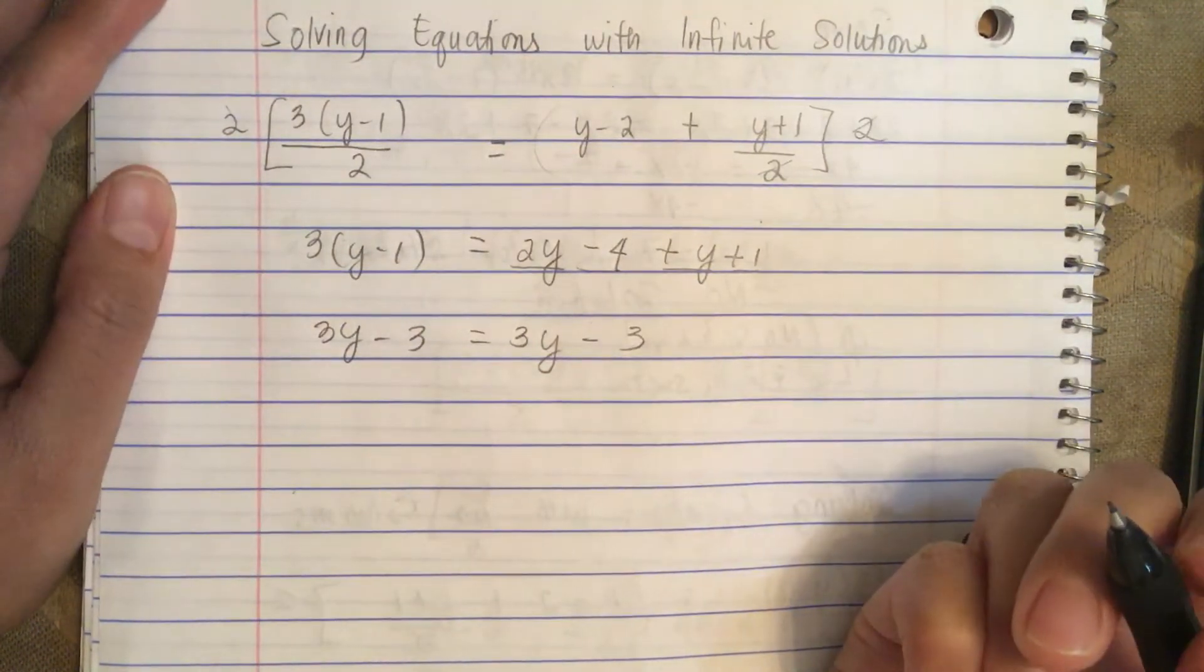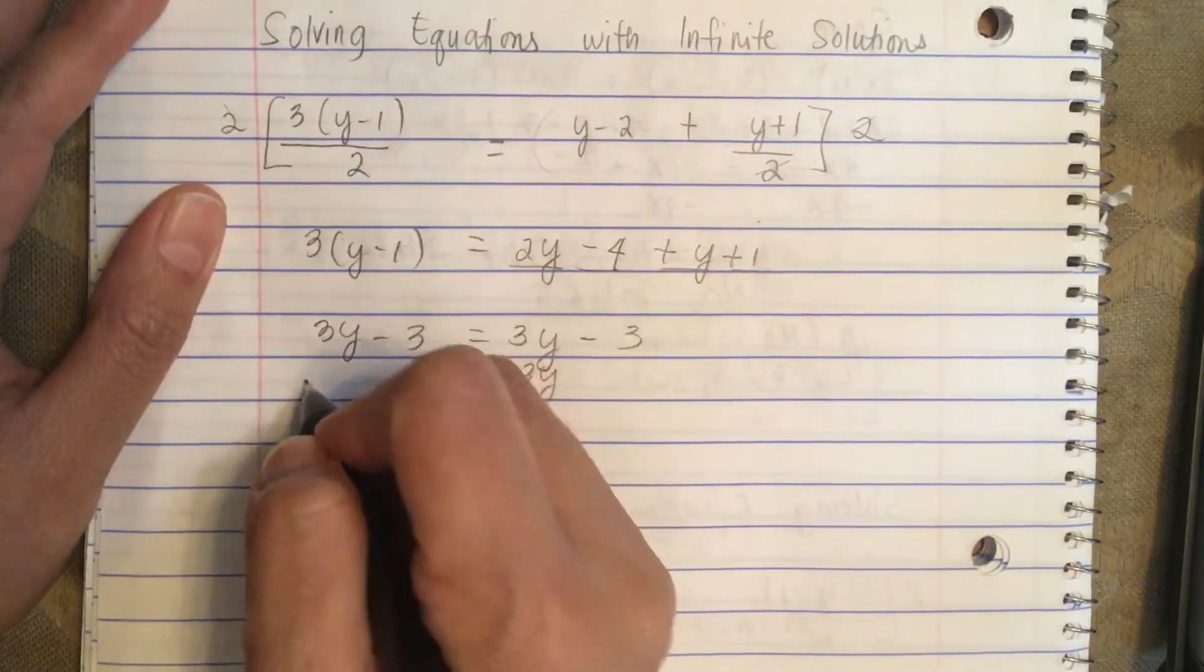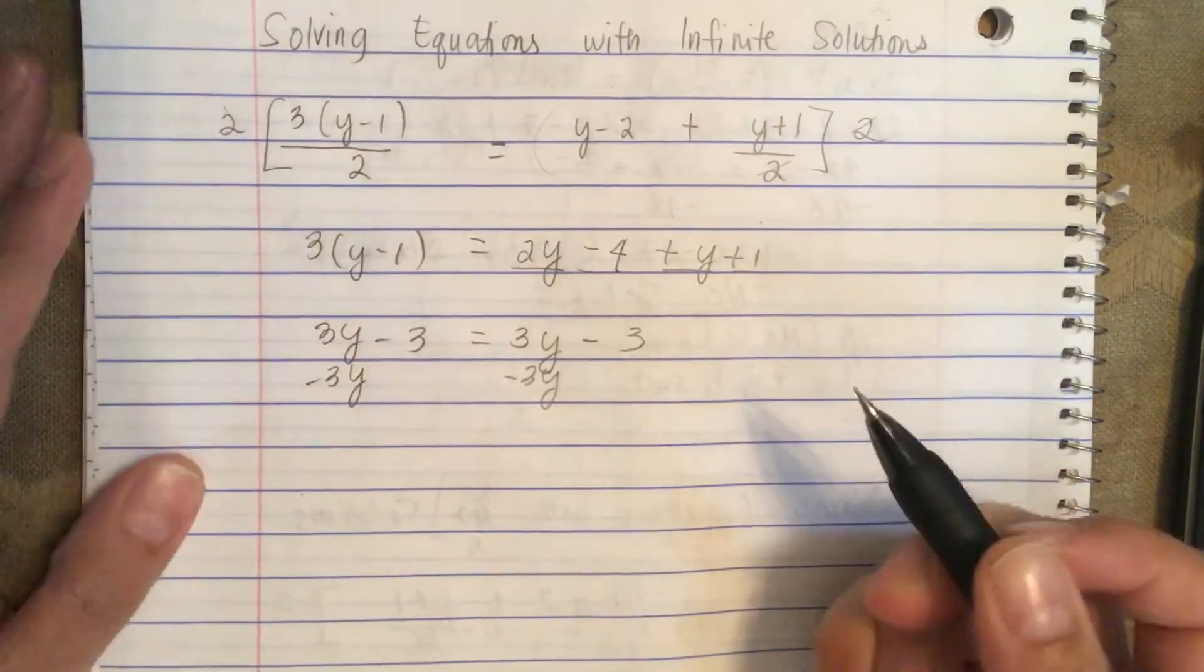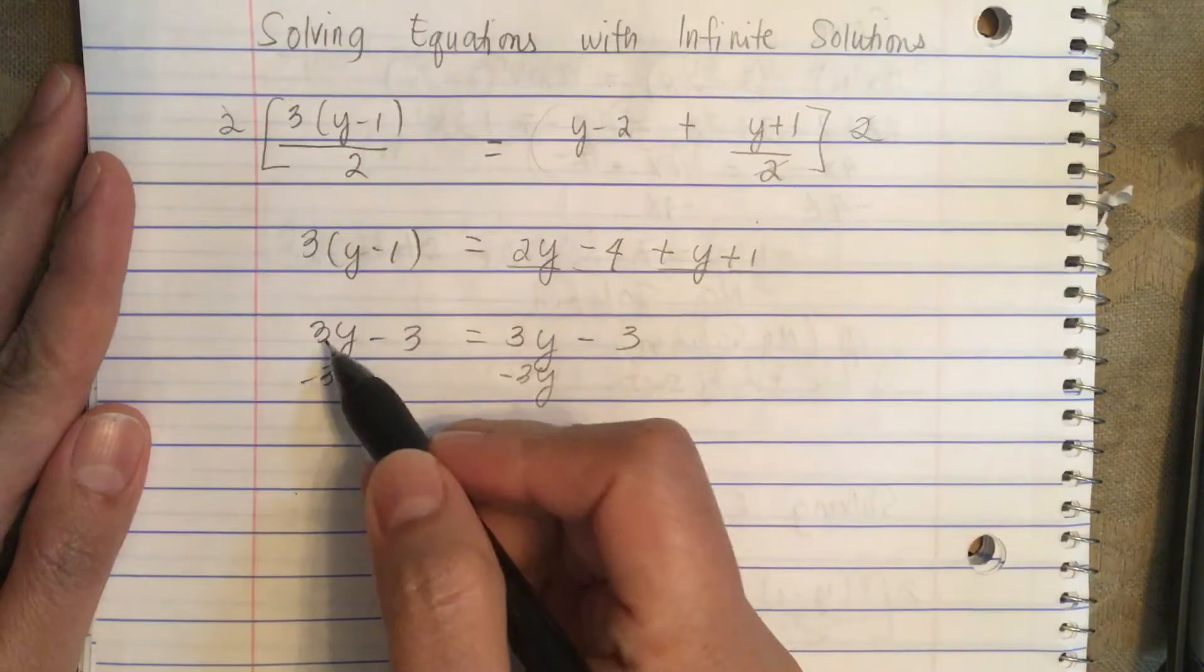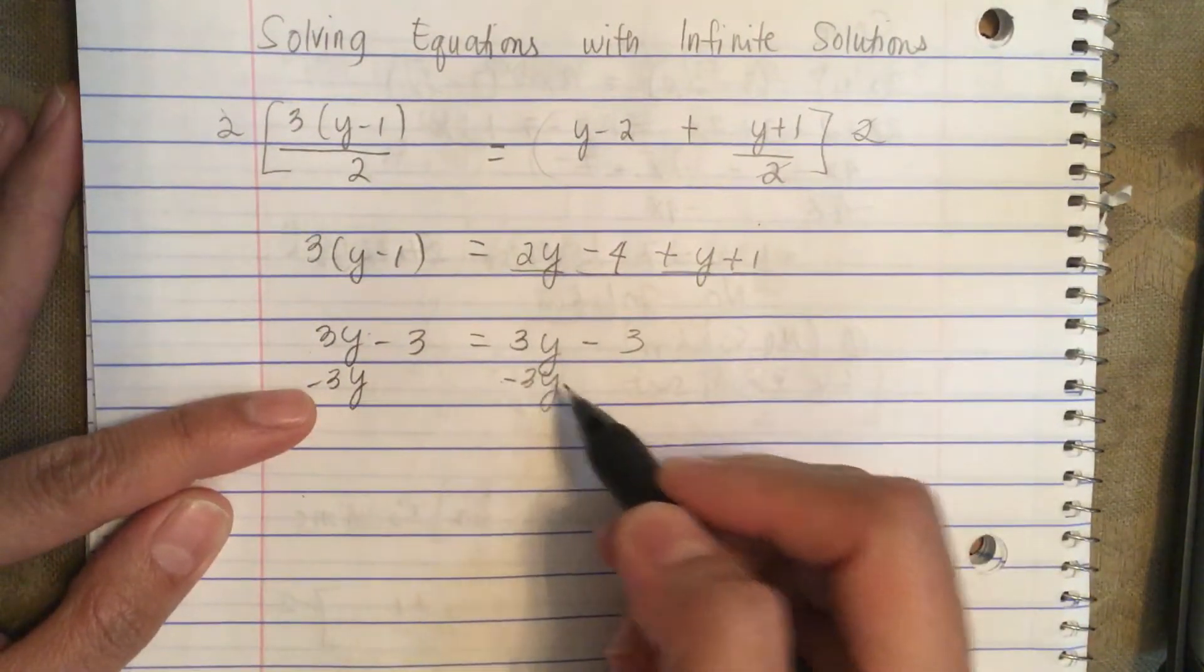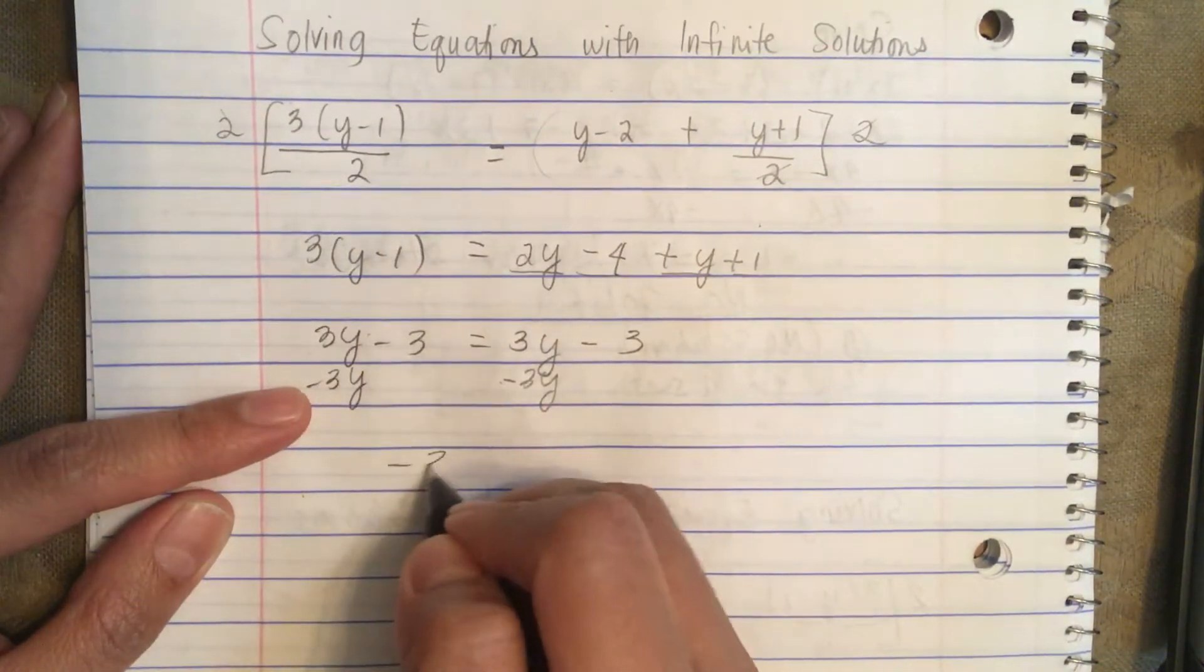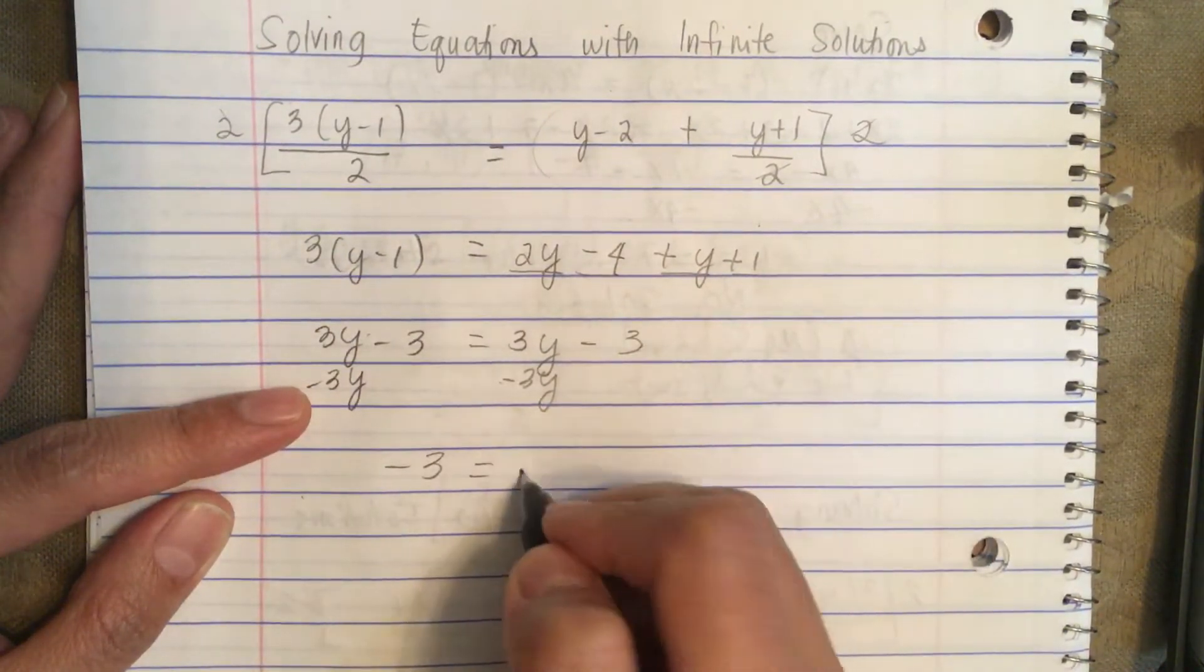Now let's put this -3y on the other side. 3y minus 3y equals zero, and here 3y minus 3y equals zero. So now we have -3 equals -3.